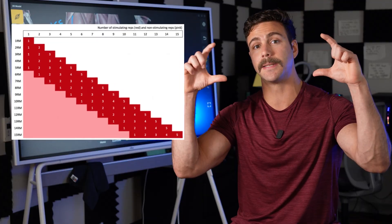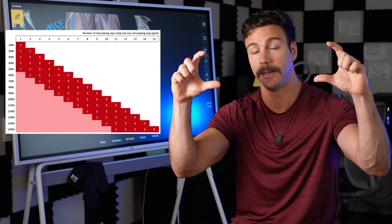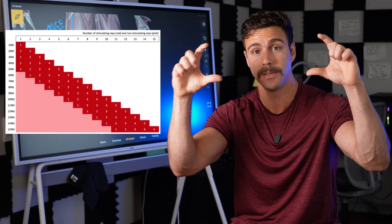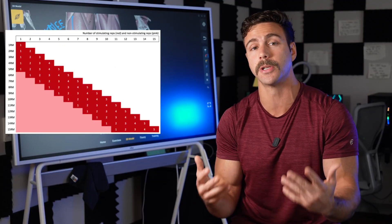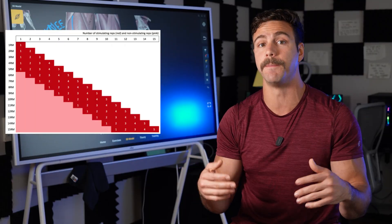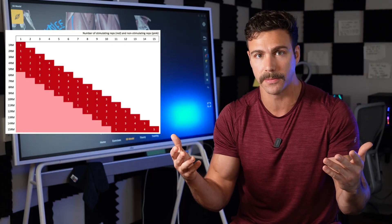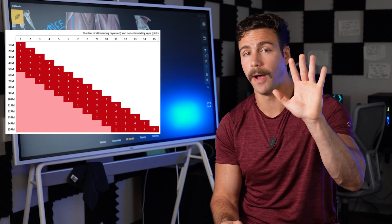That in the context of a single strength training set in an unfatigued state, taken to failure, the last four to six reps are the ones responsible for growth. Those are the effective reps or the stimulating reps. So for simplicity, let's just call it five reps.